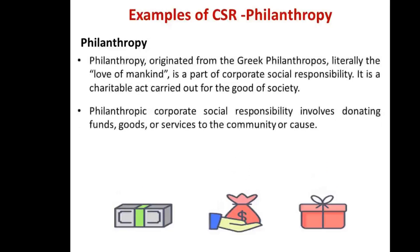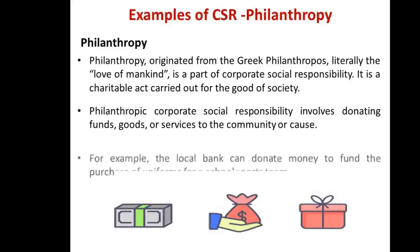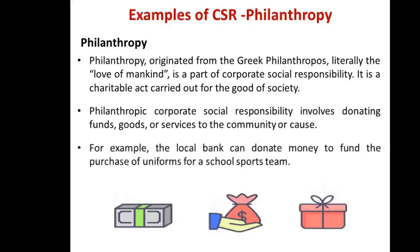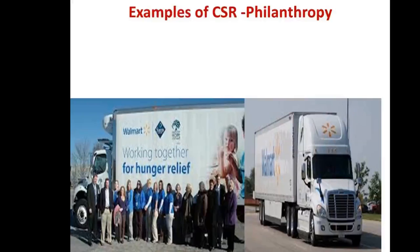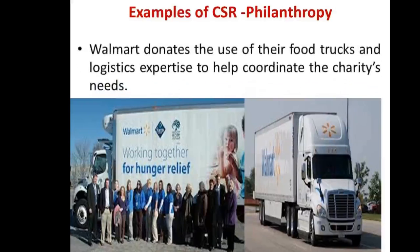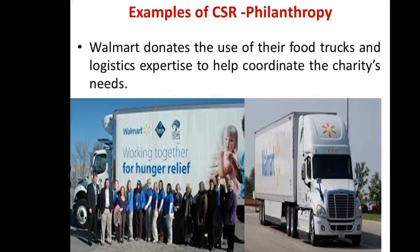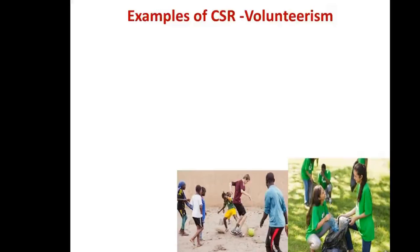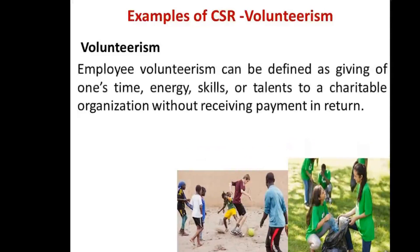We will see each type of CSR with examples. Philanthropy is when a company donates money to the society or the community in which it operates its business. It can be in the form of cash or any other resources given to help the community. A classic example is Walmart — they are giving their food trucks and logistics expertise to help coordinate charity needs.